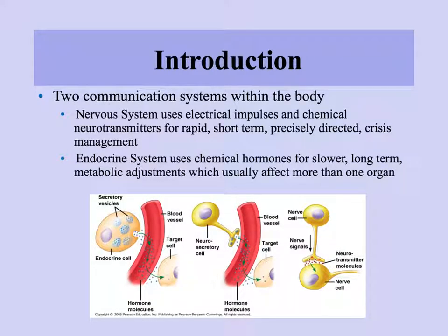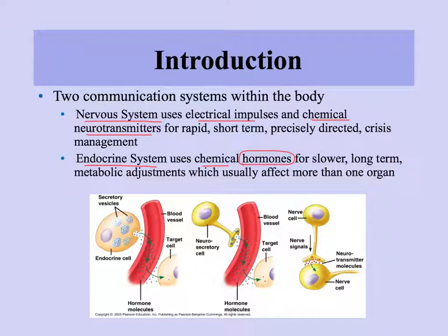In the body there are two communication systems that relay information from one part of the body to the other. We've already talked about the nervous system and how it uses electrical impulses down the nerve cells and chemical neurotransmitters across the synapses in order to have rapid, short-term, precisely directed crisis management type of action. In comparison, the endocrine system also uses chemicals, but we call these chemicals hormones, and it produces slower, long-term changes in metabolism, usually affecting more than one organ. The nervous system is quick and very precise; the endocrine system is much more general, potentially covers more of the body, and has a longer-lasting effect.